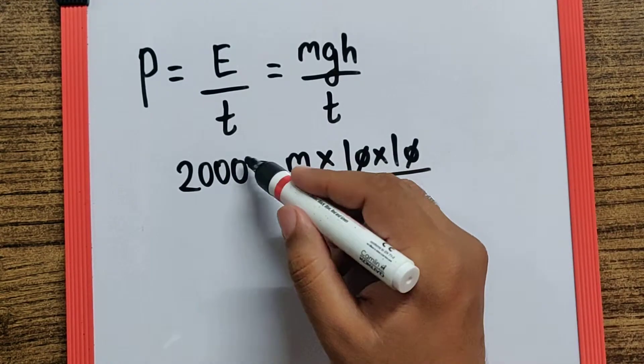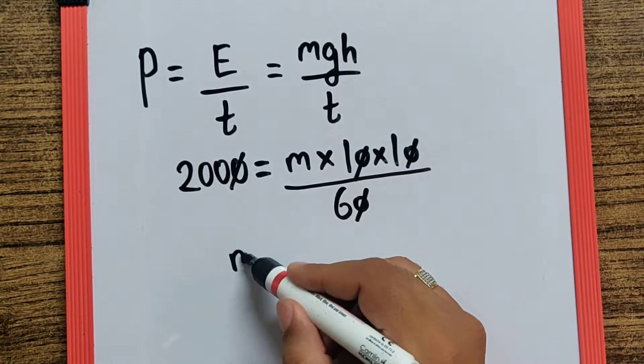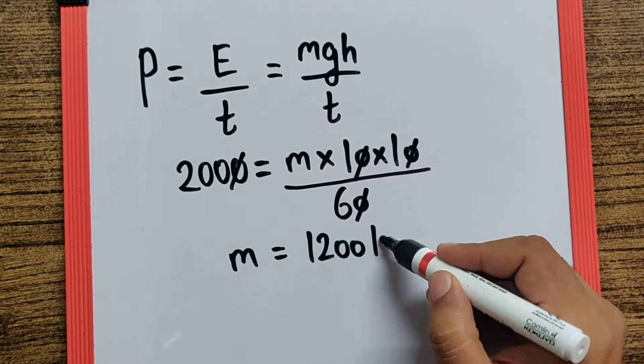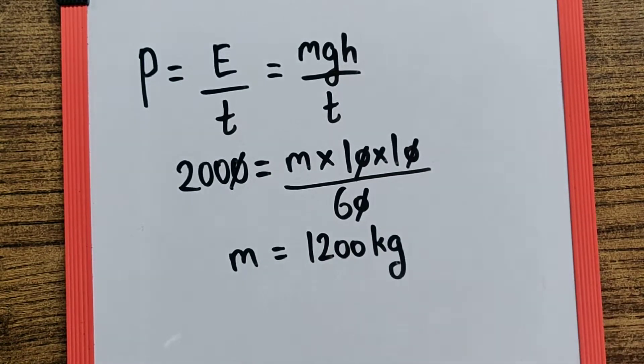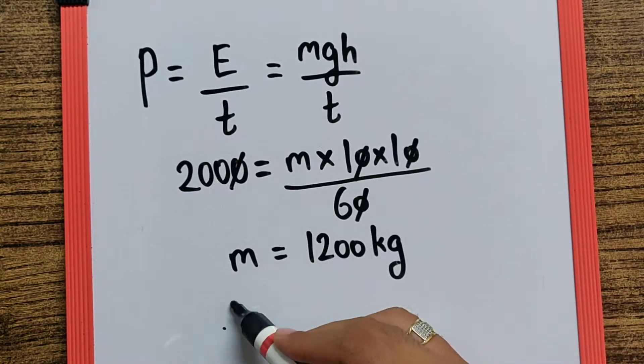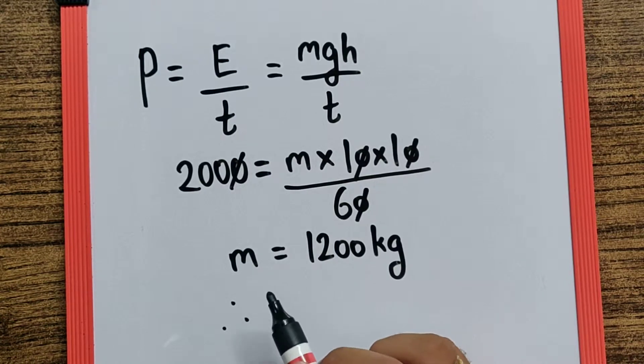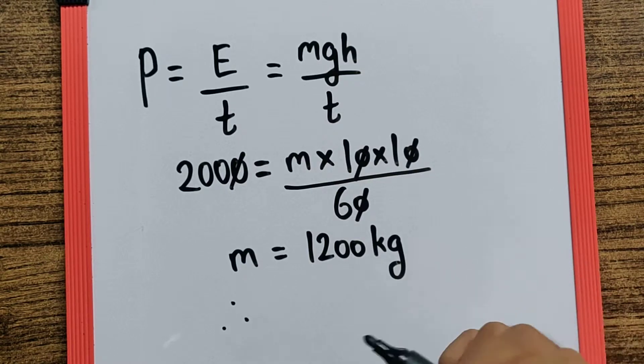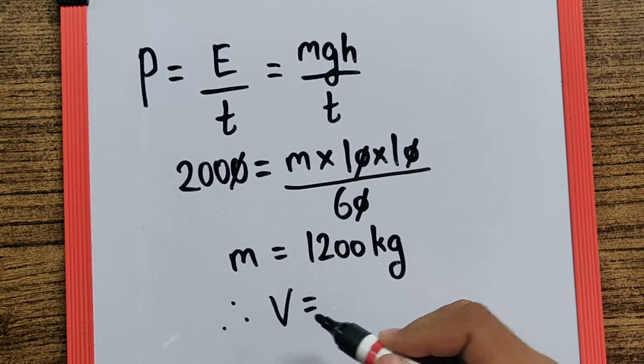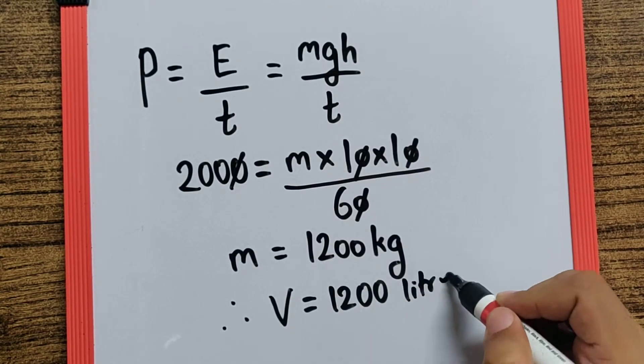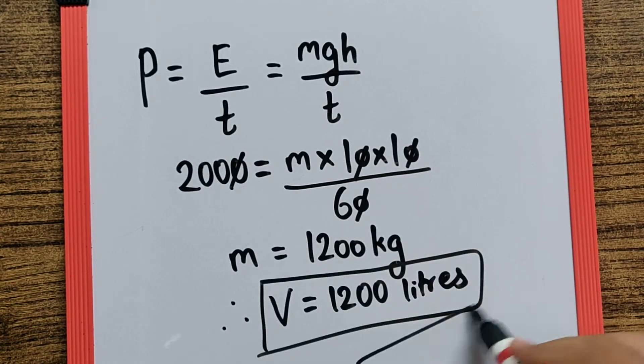You get the mass as 1200 kg. Now since the option given is in the form of liters, we can say since the density of water is 1 gram per centimeter cube or 1000 kg per meter cube, the volume we get is 1200 liters and that is your final answer.